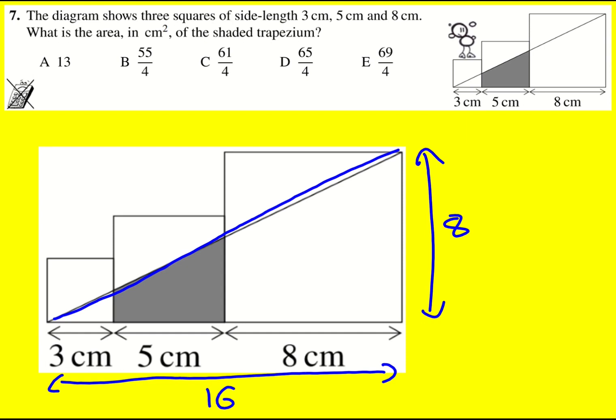Hence, the shorter side of the trapezium must be 1.5. This side here, if I'm going along 8, it's going to be 4.